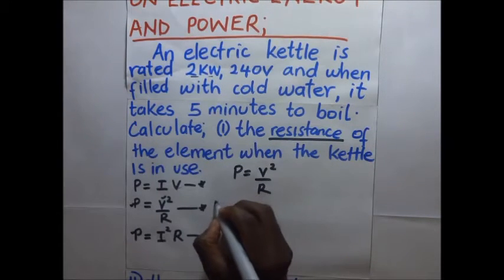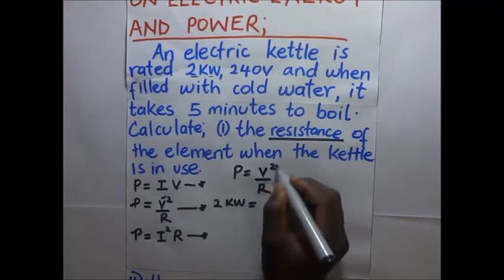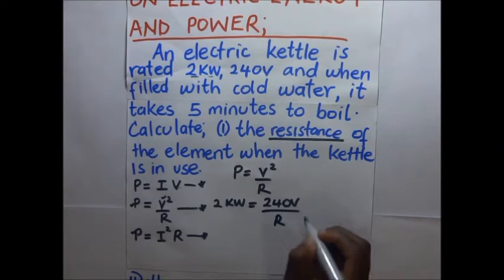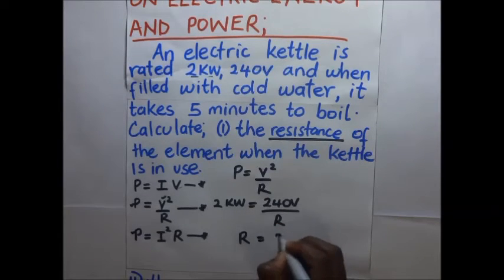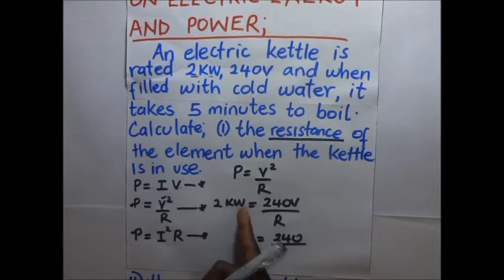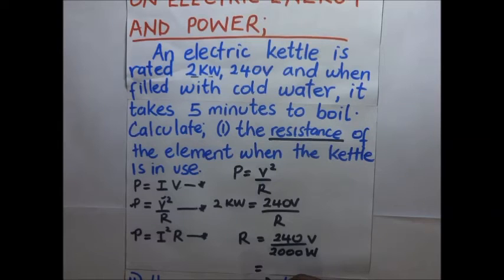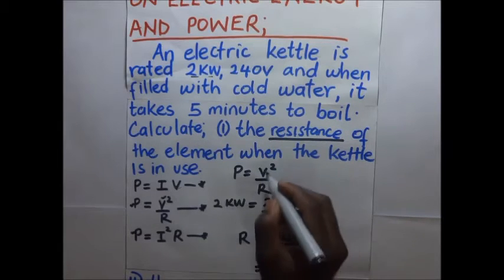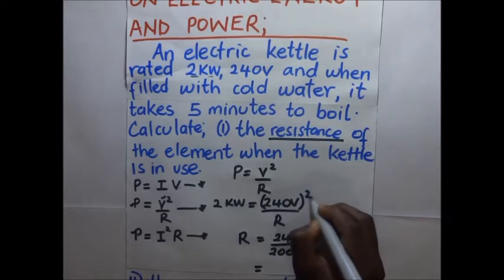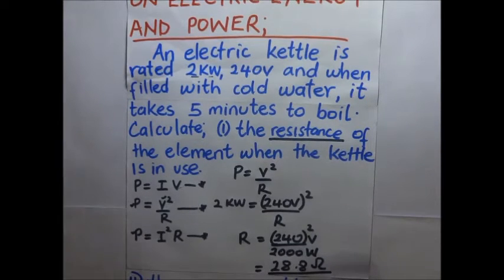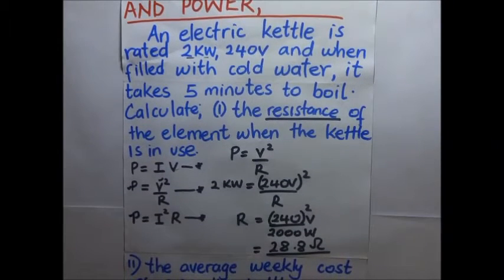So we use: power = V squared over R. Our power is 2 kilowatts, which equals 240 volts squared divided by R. Making R the subject: R = 240 squared divided by 2 kilowatts, which is 2,000 watts. So R = 240 squared divided by 2,000, which gives us 28.8 ohms. That is the resistance of the element.